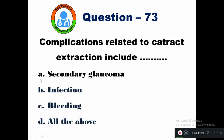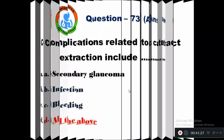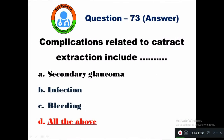Question 73: Complications related to cataract extraction include — option A secondary glaucoma, B infection, C bleeding, D all of the above. The right answer is all of the above — secondary glaucoma, infection, and bleeding are all complications which can occur due to cataract extraction.